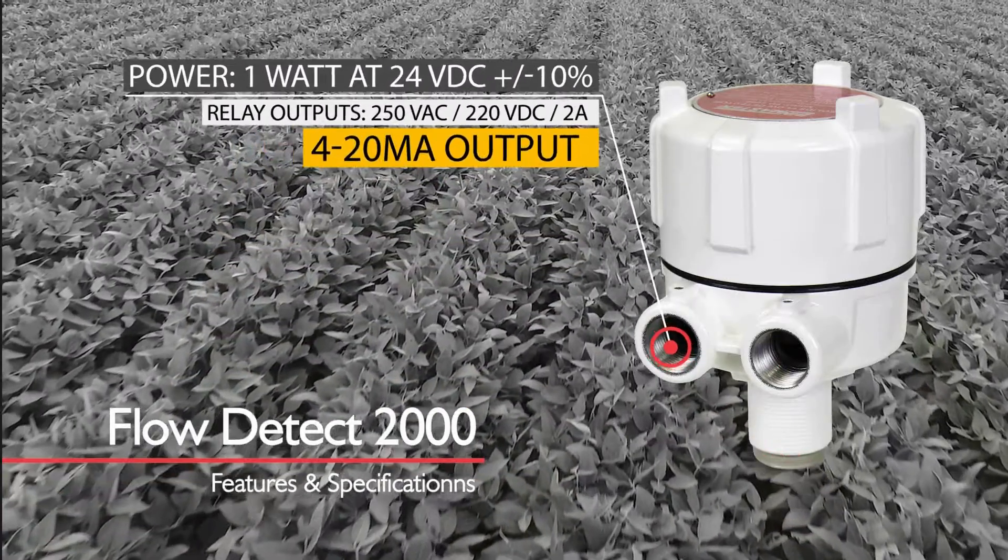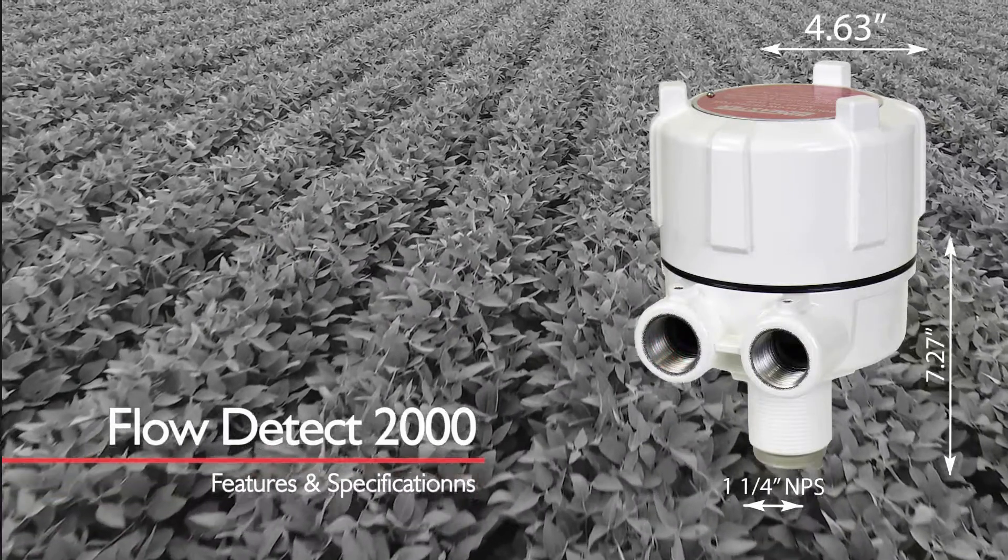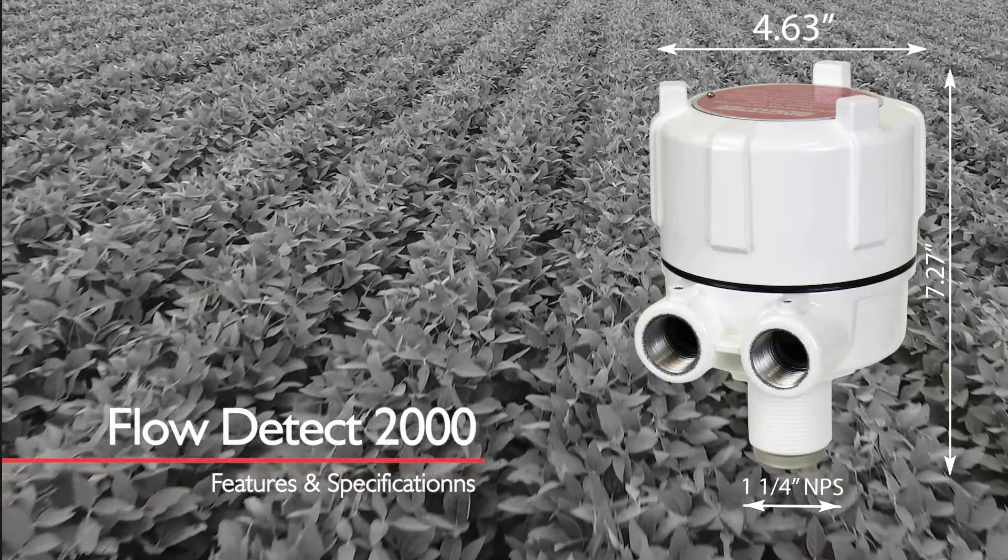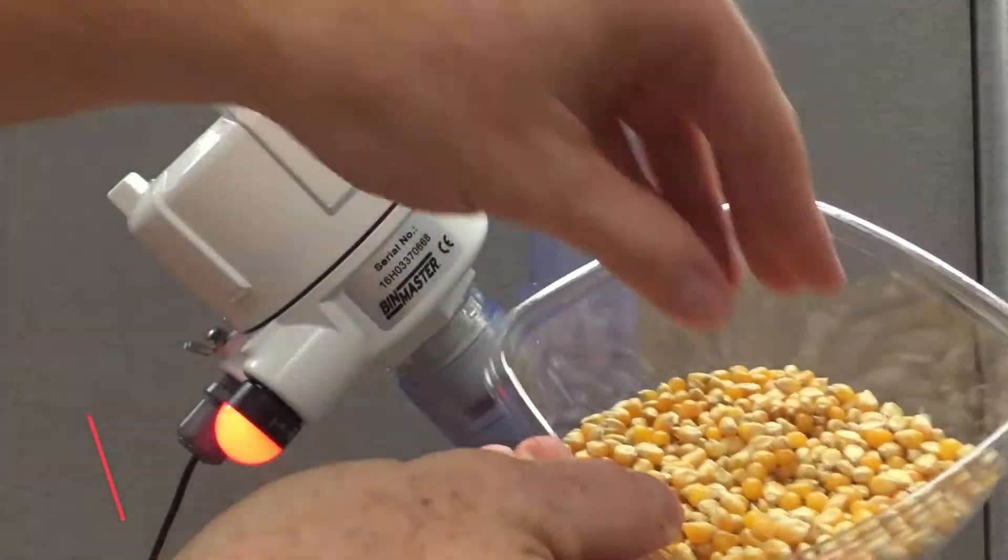It's a 24 volt DC powered unit with a 4 to 20 milliamp signal that gives you an on or off of 4 to 20. It's 4.63 inches in diameter, 7.27 in height, with an inch and a quarter NPS connection.